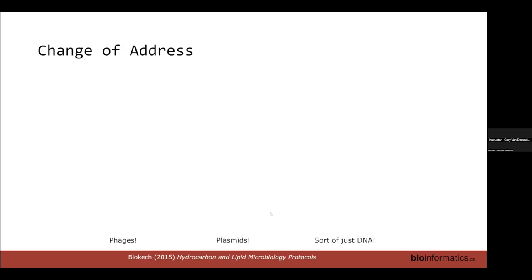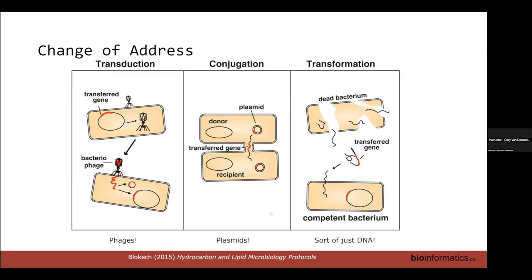We need a method to be able to track lateral gene transfer, and it's an interesting problem with lots of important downstream implications. So what are we talking about? It's essentially a change of address — a movement of genes from one organism to another — and this can occur in three ways.